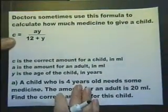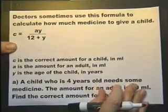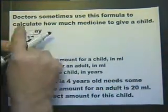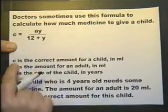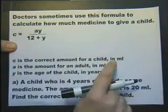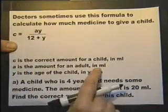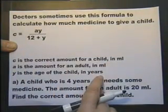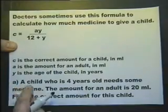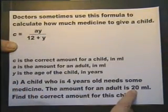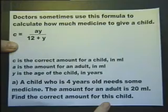It says here that doctors sometimes use a formula to calculate how much medicine to give a child. So here we've got a formula, and we're told that C is the correct amount for the child in milliliters. A is the amount for an adult in milliliters, and Y is the age of the child. So a child who's 4 years old needs some medicine. The amount for the adult is 20. Find the correct amount for the child.